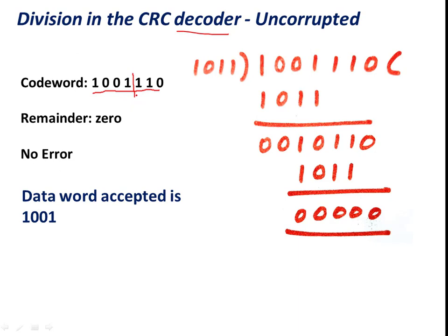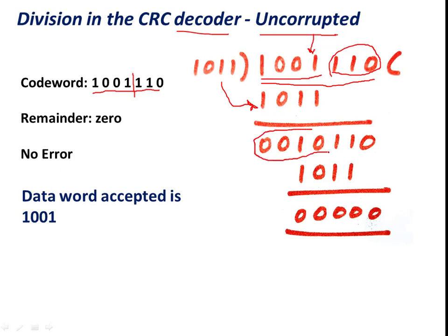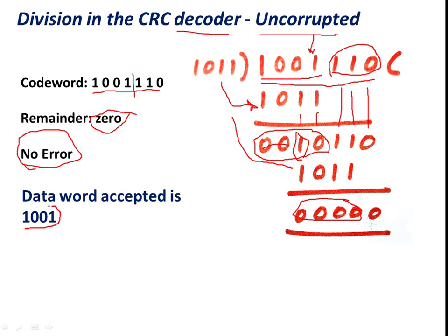The transmitted code word is 1001110, where 1001 is the data word and 110 is the remainder appended at the encoder. This code word is again processed with the XOR function using the CRC code. XOR of the first 4 bits gives 0010, then 0 XOR 1 is 1, and 1 XOR 1 is 0. Continuing the process and leaving zeros, the final remainder is completely 0. A remainder of zero means there is no error, and the actual data word 1001 is accepted without error.